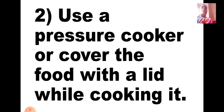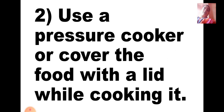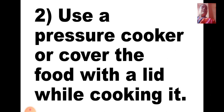The second tip is: use a pressure cooker or cover the food with a lid while cooking. In a pressure cooker, you require less fuel because it takes less time compared to a regular utensil. A pressure cooker saves time as well as fuel. Whatever things you can cook in a pressure cooker, you should always cook in one. And whenever cooking, always cover the utensil with a lid.